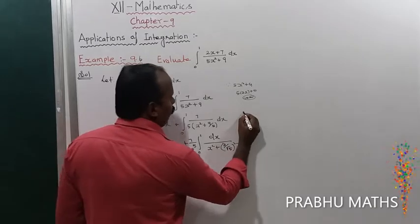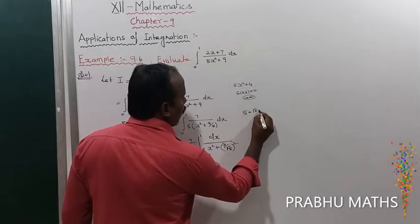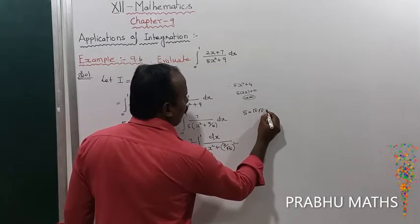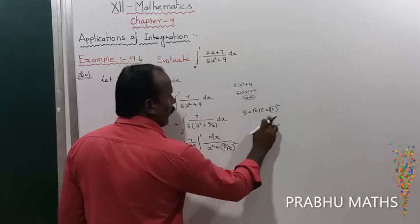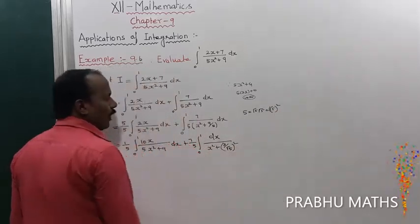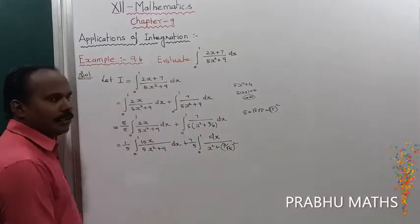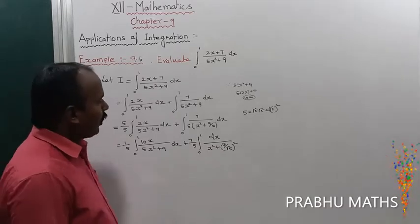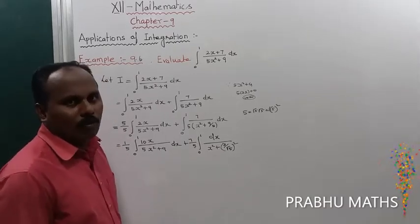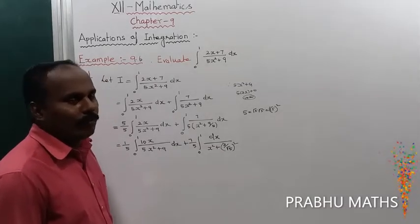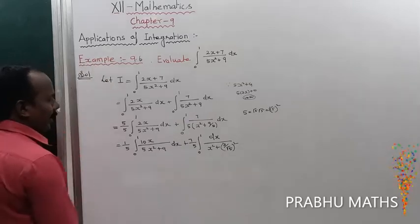Now 9/5 is converted to (3/√5)², because 5 becomes √5 · √5 = (√5)². So 9/5 = (3/√5)². This matches the form ∫ dx/(x² + a²) = (1/a)·tan⁻¹(x/a), which is the form of the second integral.